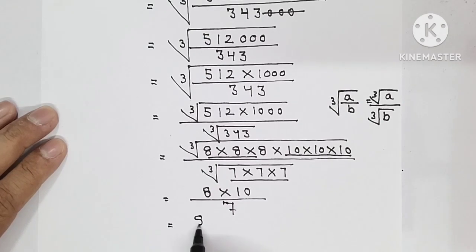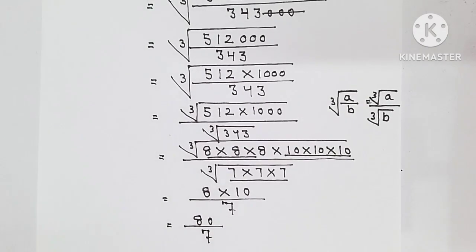So the answer is 80 upon 7. This was the solution to this question. Hope you have understood it. Thank you.